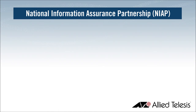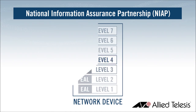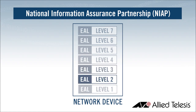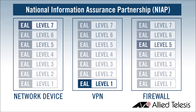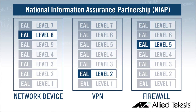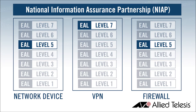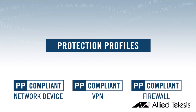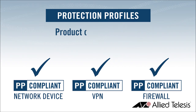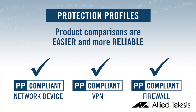In 2012, NIAP, the US organization responsible for implementing Common Criteria, decided to change the evaluation methodology. The problem with the EAL system was that products could have different EAL levels within the same protection profile, which makes product comparisons very difficult for purchasers. The revised system removed the EAL levels for each protection profile and instead products are simply deemed compliant if they pass. The new protection profiles ensure security requirements are achievable, repeatable, and testable, and product comparisons are therefore easier and more reliable.